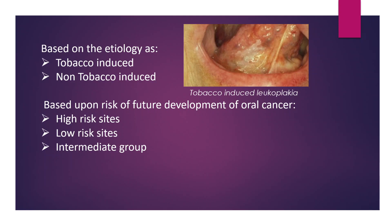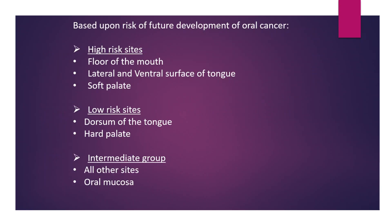If leukoplakia is present in association with erythralukoplakia, then it is called erythralukoplakia. Leukoplakia is also classified based on etiology as tobacco-induced and non-tobacco-induced. Based upon risk of future development of oral cancer, leukoplakia is classified as high-risk sites, low-risk sites, and intermediate group. Floor of mouth, lateral or ventral surface of tongue, and soft palate are all high-risk sites. Dorsum of tongue and hard palate are low-risk sites, and all other sites on oral mucosa come under the intermediate group.